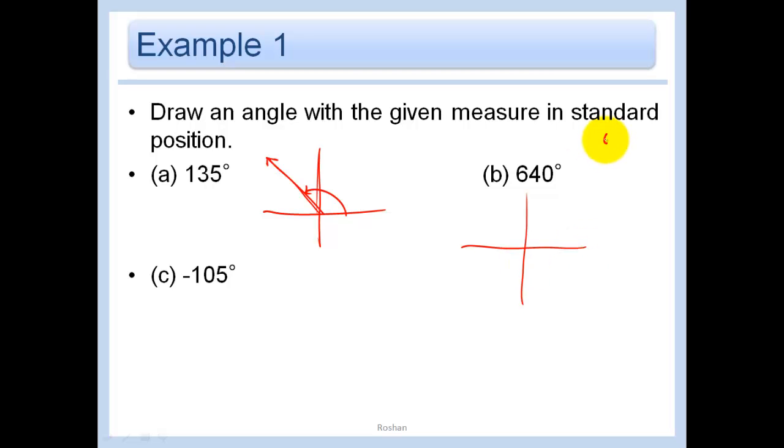640. Well, let's see, 640. We can definitely take a 360 out of that, and we come up with 280 degrees. So it means we go one time around, and then we go around another 280 degrees. So this is 90, 180, 270, and a little bit more. So we end up right here. You do not need that whole spiraling thing. I was just trying to show you what I was thinking. All you really need is this ray right here to show me that angle.